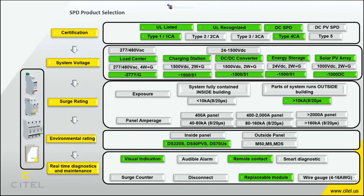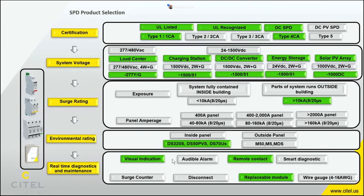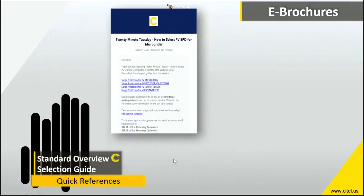Environmental ratings should be based on the enclosure the SPD is installed in, taking into account ambient temperatures and potentially hazardous locations. Unlike SPCs, SPD assemblies have a visual fault indicator, remote dry contacts, and can be modular to make maintenance easier without rewiring. More sophisticated options are coming, including smart diagnostics and surge counters.